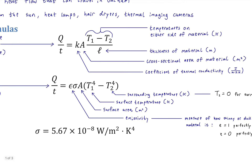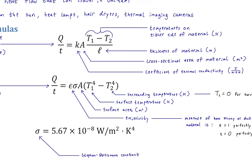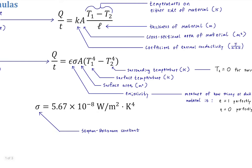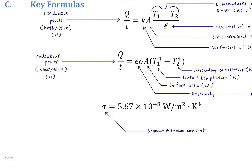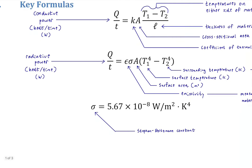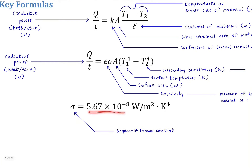The last constant is sigma (σ), the Stefan-Boltzmann constant, used only in the radiative power formula. Its value is 5.67 × 10⁻⁸ watts per square meter per Kelvin to the fourth power.